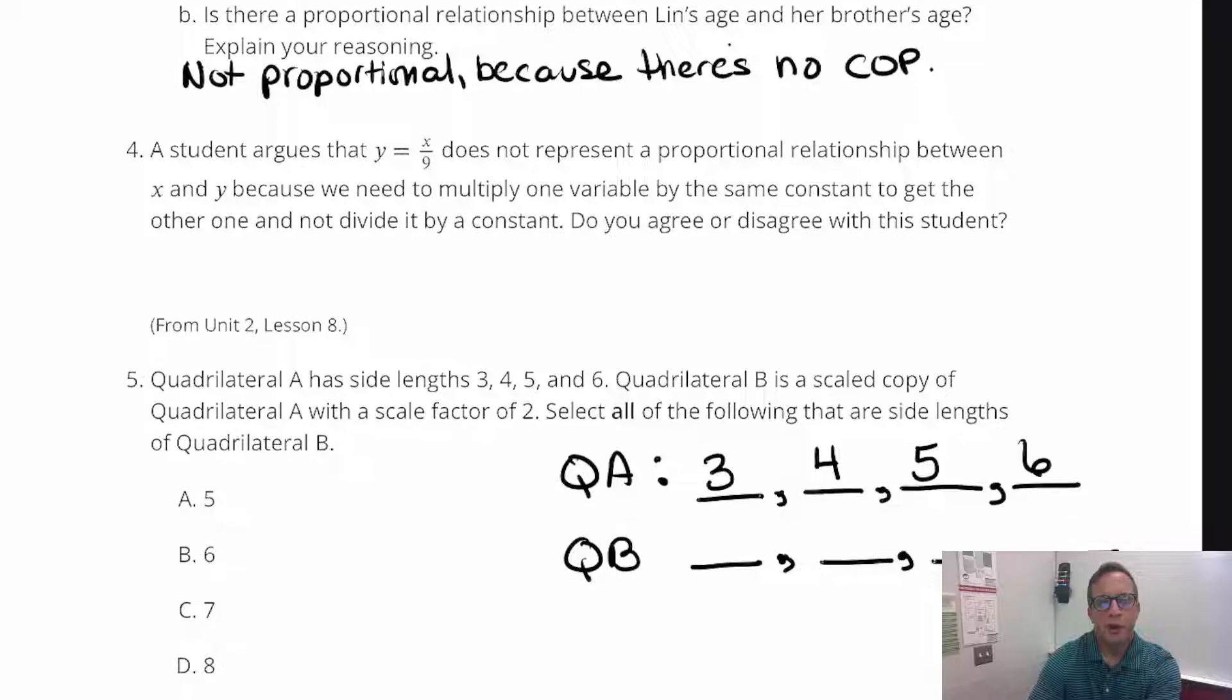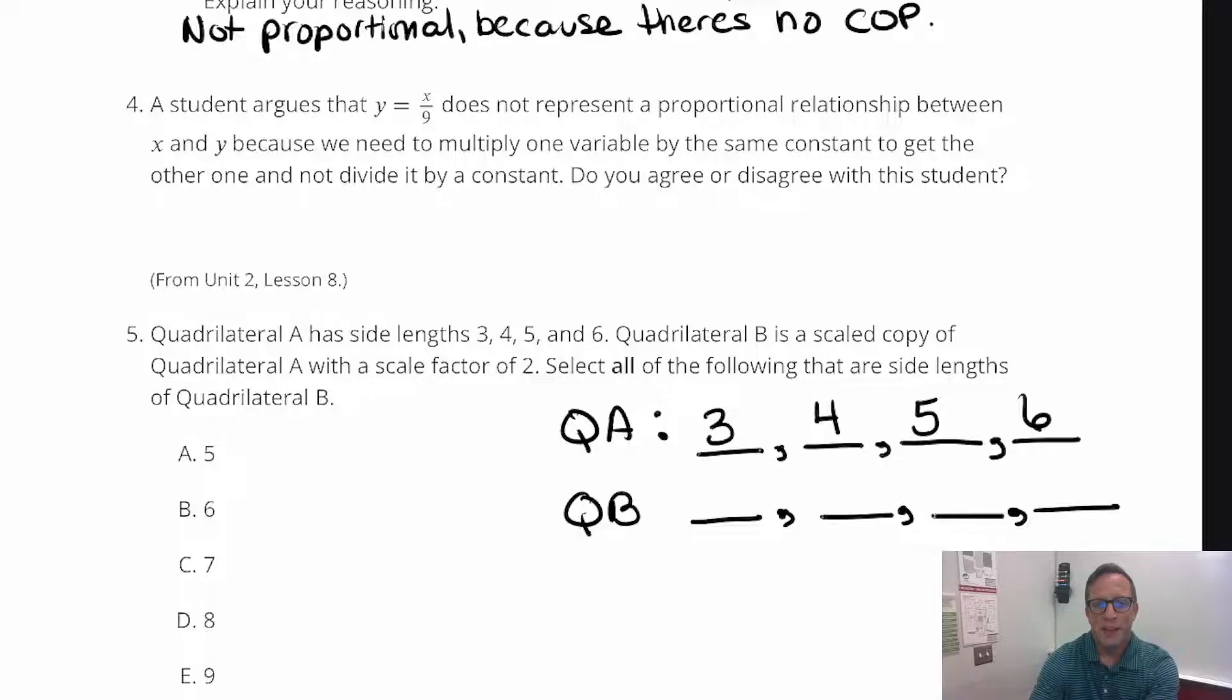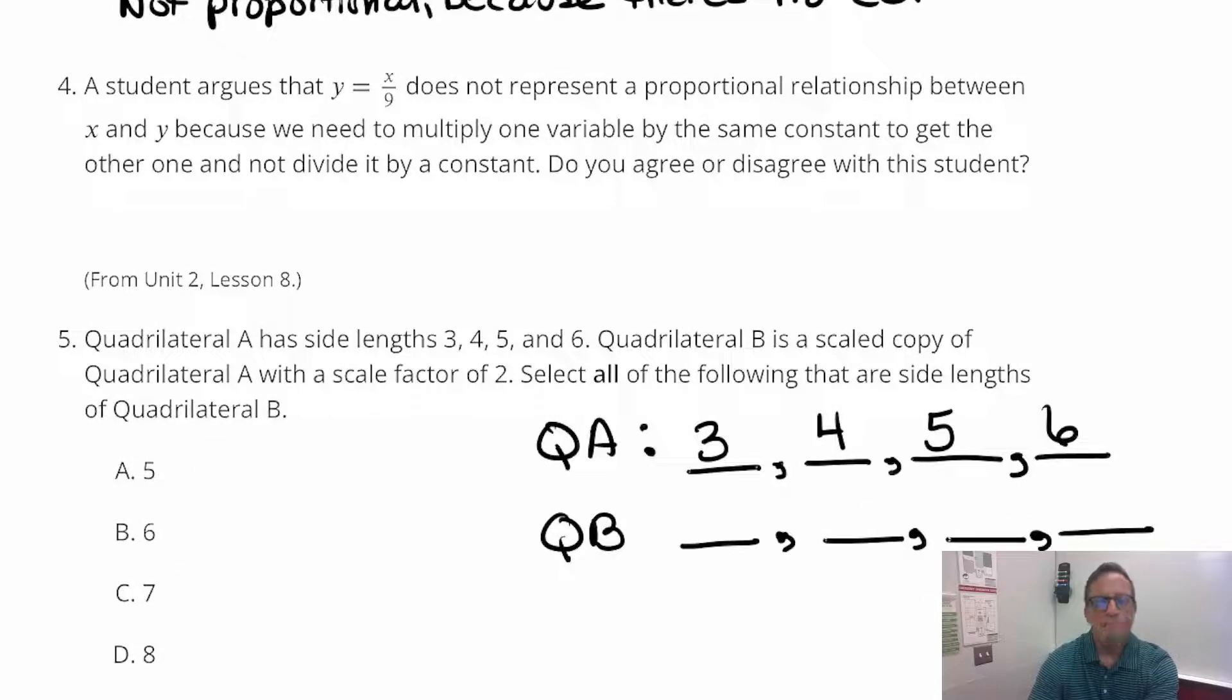Next one. A student argues. That's what students like to do. Students love to argue. So that sounds real. So a student argues that y equals x over 9 does not represent a proportional relationship between x and y because we need to multiply the variable. And x over 9 means division. That means division. But you guys know better, right? You know better than this. You know that a number divided by 9 is also the same thing as multiplying by one ninth. Just like dividing by 2 is like multiplying by one half. Or dividing by 3 is like multiplying by one third. A unit fraction.